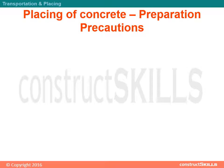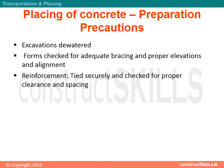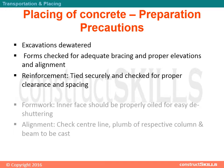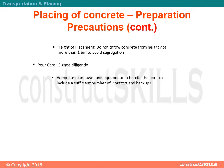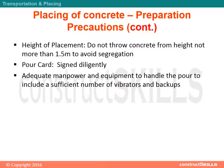Placing of concrete — preparation precautions: excavations cleared, forms checked for adequate bracing and proper elevations and alignment. Reinforcement tied securely and checked for proper clearance and spacing. Formwork inner face should be properly oiled for easy removal of shuttering. Check center line and plumb of respective column and beam to be cast. Do not throw concrete from a height of more than 1.5 meters to avoid segregation. Pour card signed diligently; adequate manpower and equipment to handle the pour, including a sufficient number of vibrators and backups.